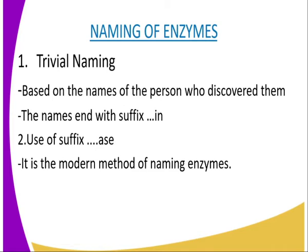There are several methods used in the naming of enzymes. The first is trivial naming, whereby this method involves giving enzymes names based on the names of persons who discovered them. The names of such enzymes end with the suffix '-in'. For example, we have pepsin, renin, and ptyalin. Some of these names have been retained to date.